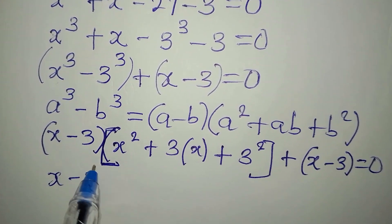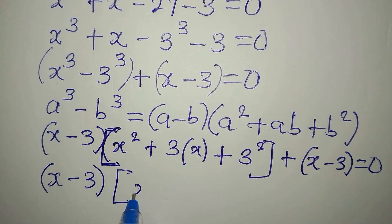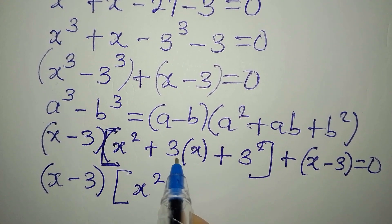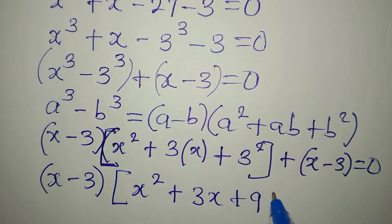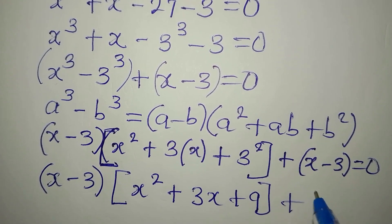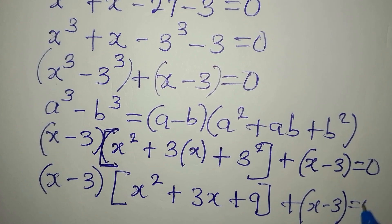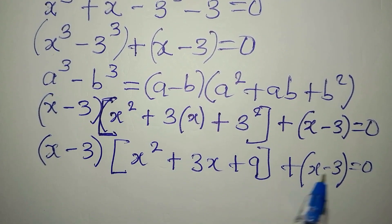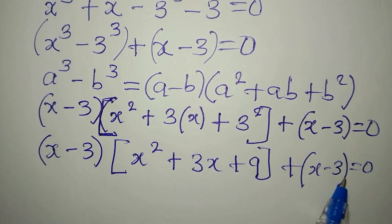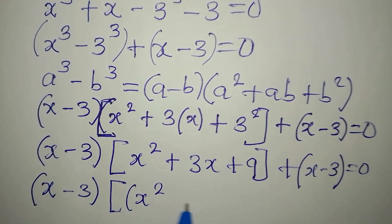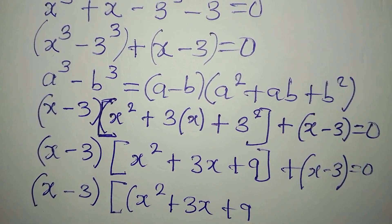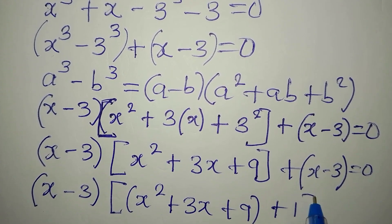Now x minus 3 is a factor. The other factor from the difference of cubes expansion gives us x squared plus 3x plus 9. We have this bracket, then plus open bracket x minus 3, all equal to zero. Since x minus 3 appears in both terms, we can factorize it out, giving x minus 3 times the quantity x squared plus 3x plus 9 plus 1.